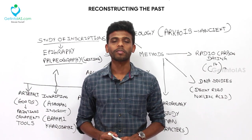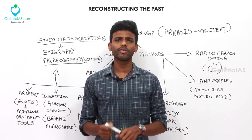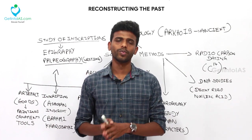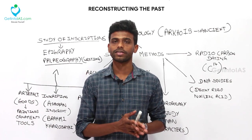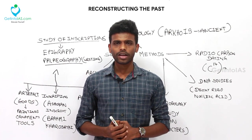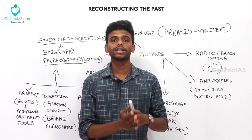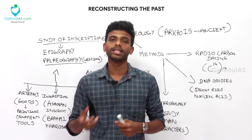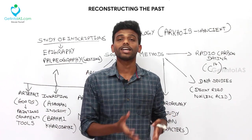Hello everyone, this is Mohan Kumar from Get Into IAS and I am back with the next video: Reconstructing the Past. In the previous chapter we dealt with the evolution of humans, but in this chapter we are going to deal with how archaeologists find out how humans evolved or how they settled in the previous era. What kind of methods did the archaeologists use to find out these things? Reconstructing the past means creation of the past by bit-by-bit sources available in the present.